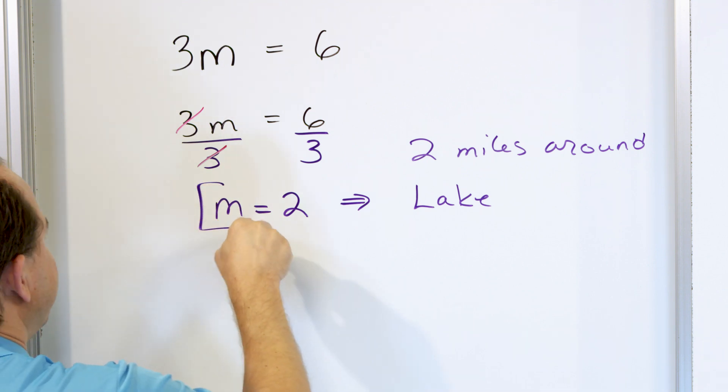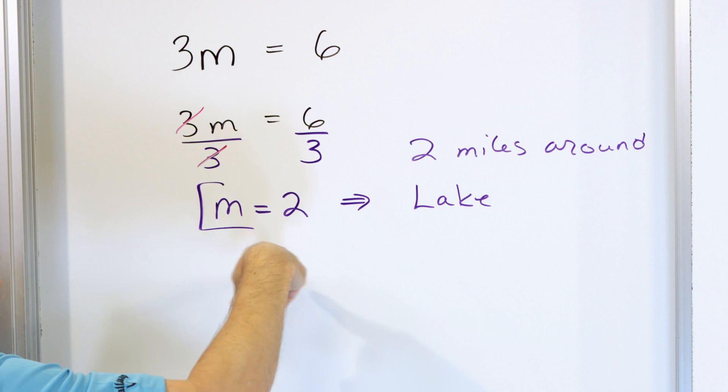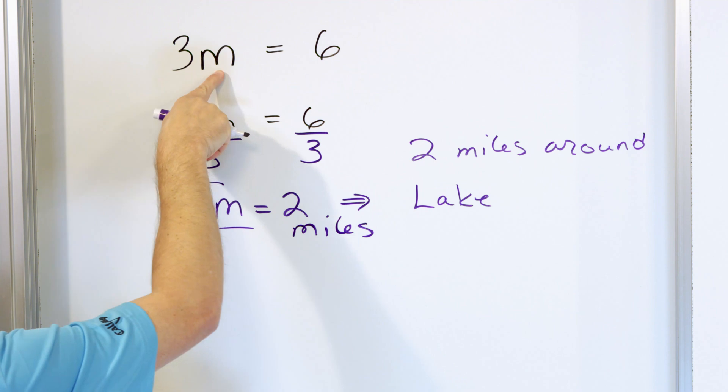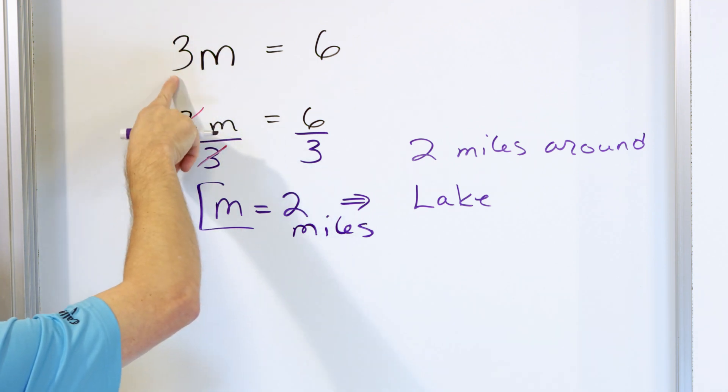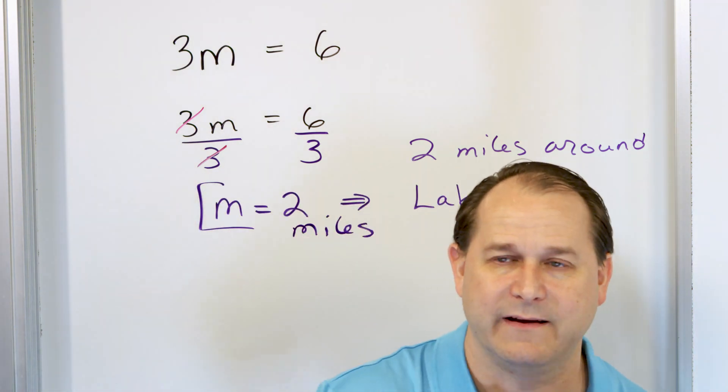If you think about it — if it actually does take two miles to go around that lake, and you go three times around, three times two is six. So we know the equation is correct, and not only is it correct, it makes sense. Now again, you could probably solve this without an equation, but that's not the point. The point is that problems will come that are too complicated to solve in your head, so we have to get practice writing equations. That's how we make progress with anything more complicated in the future.